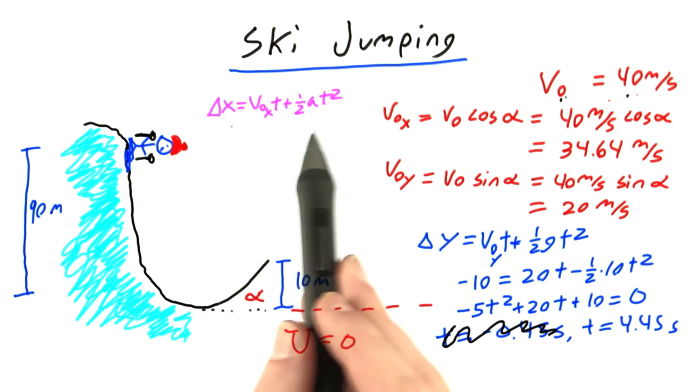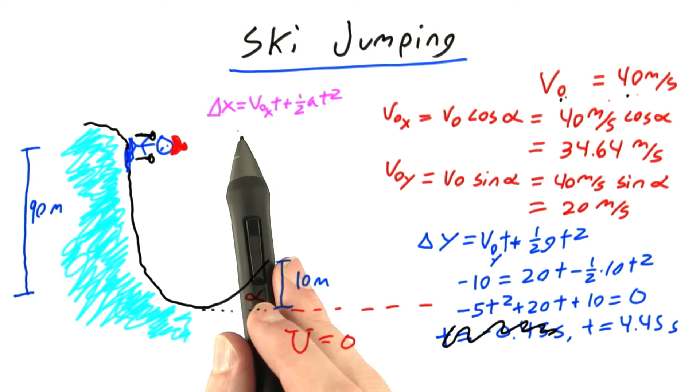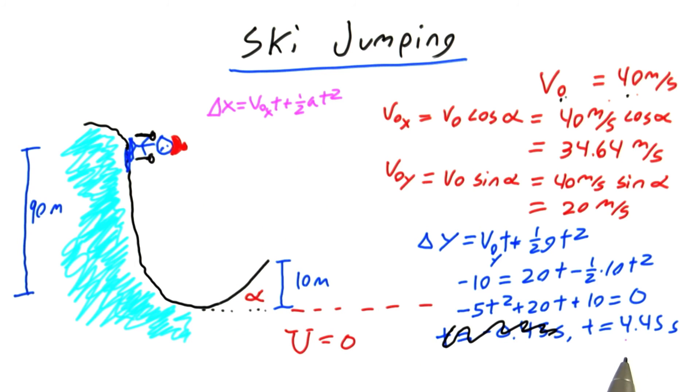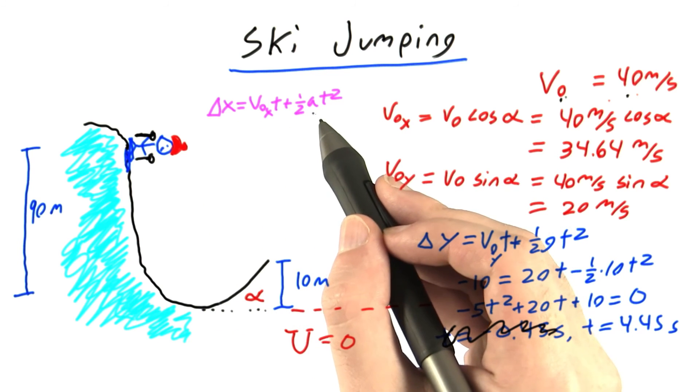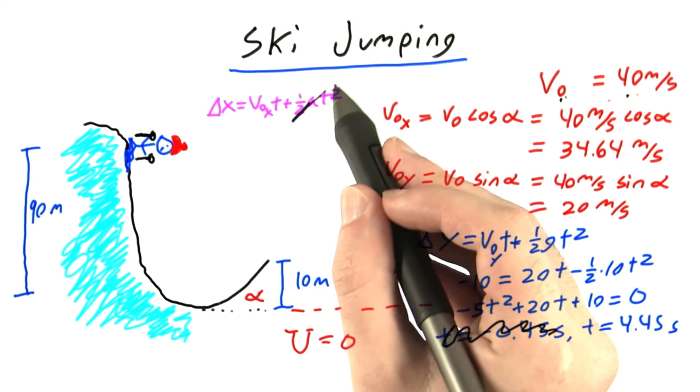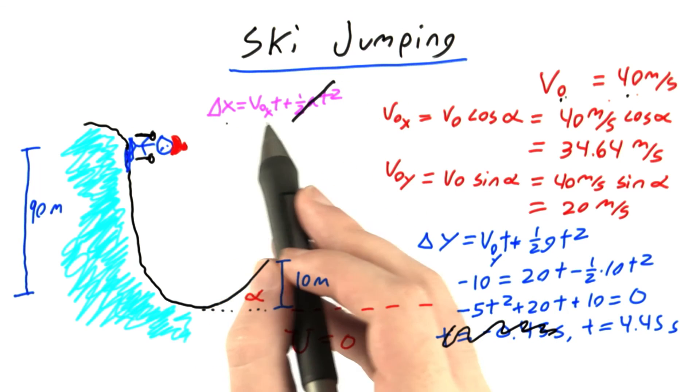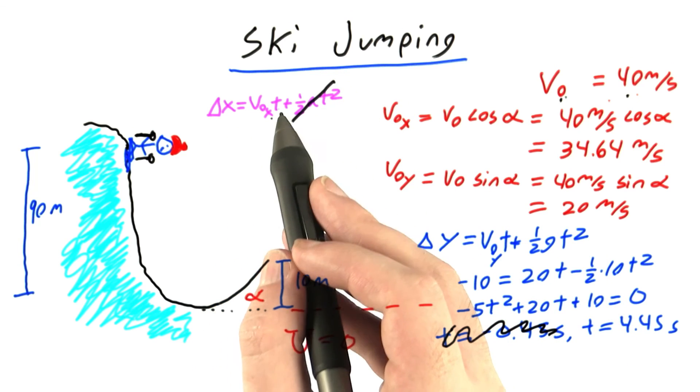Now I'm going to use this equation to figure out how far in the x direction the skier travels during that time he's in the air. Keep in mind there's no acceleration in the x direction, so this term goes to 0. We're left with just Δx equals V₀ₓ times t.